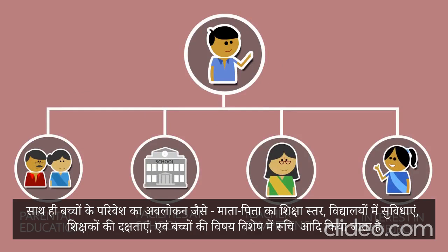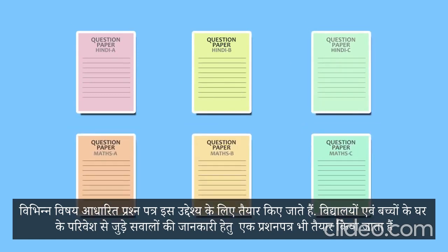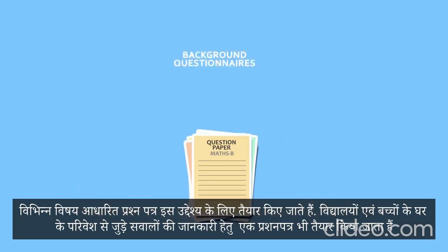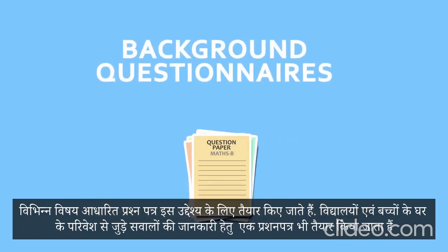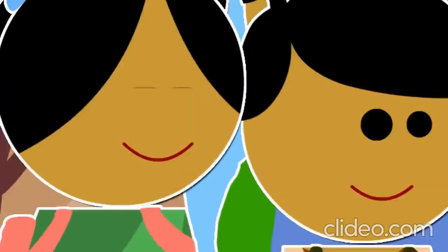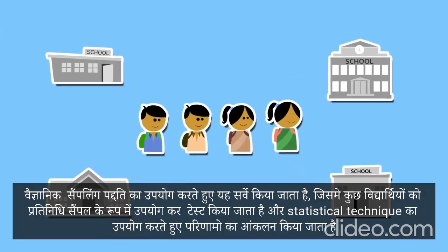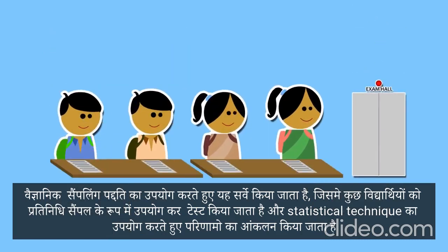When we add assessment and analysis of background factors such as parental education, facilities in school, teacher competencies, and students' interest in certain subjects, it provides rich information about student performance. Multiple test booklets are developed covering a wide range of content areas and competencies for different subjects. Background questionnaires are developed to collect information from schools, teachers, and students. Scientific sampling techniques are used to draw a representative sample of students.